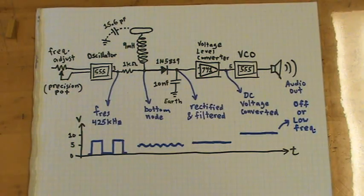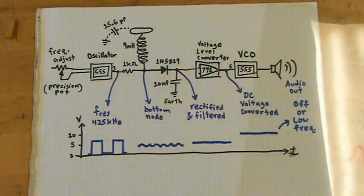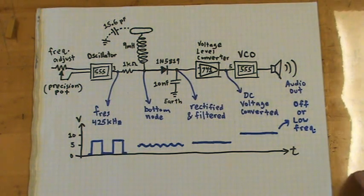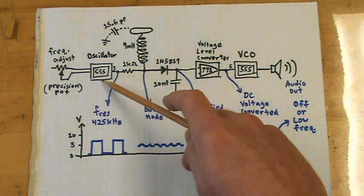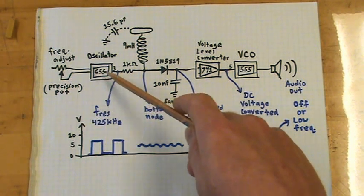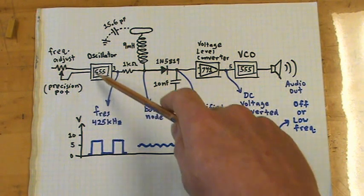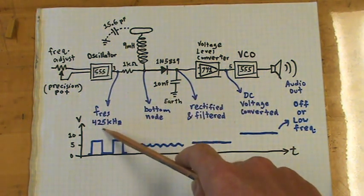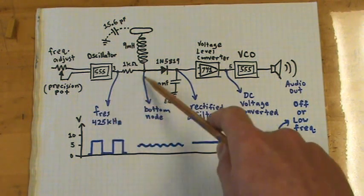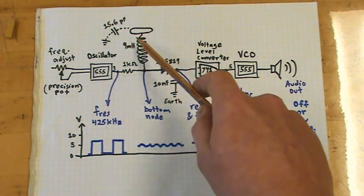I'm going to explain how this works, Jeri Ellsworth style, with paper and transparency overlay. This is the main oscillator right here, the 555 timer, just the basic standard configuration for a frequency generator. It generates in this case 425 kilohertz, which is the resonant frequency of the LC circuit.